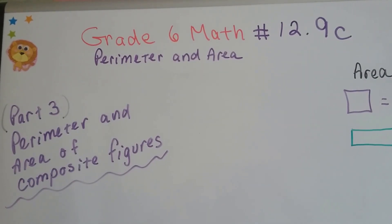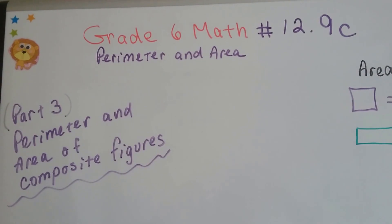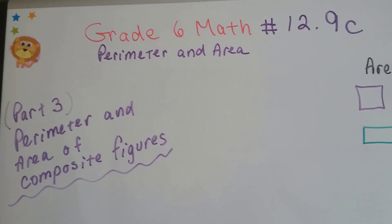Grade 6 math number 12.9c. This is MoreHelp, Part 3, Perimeter and Area of Composite Figures.